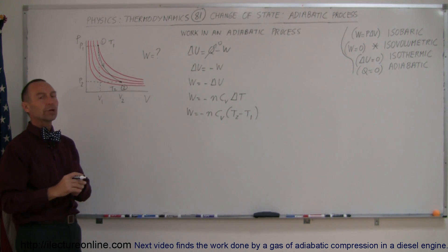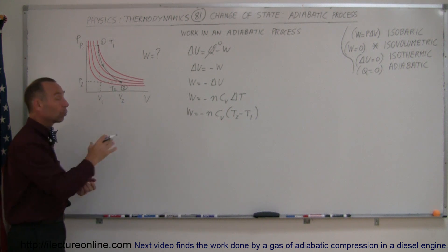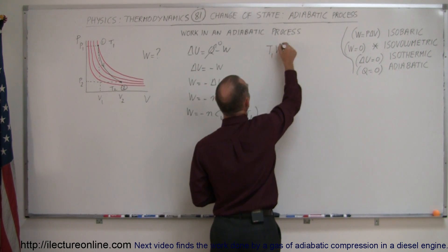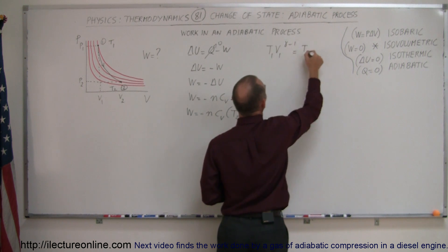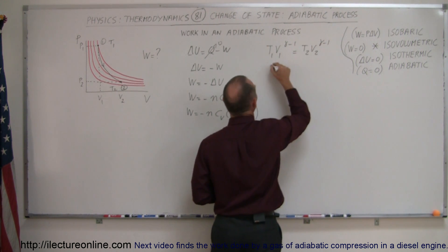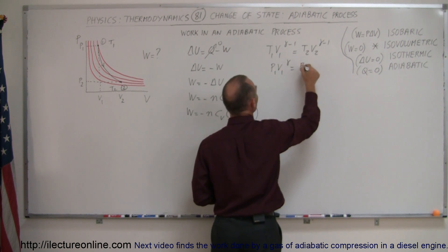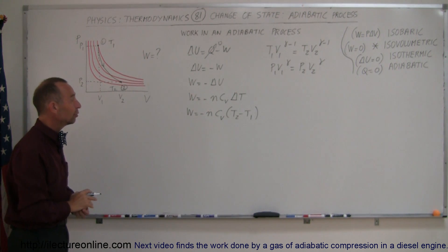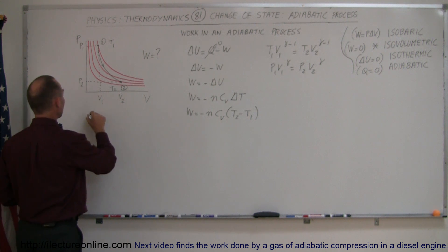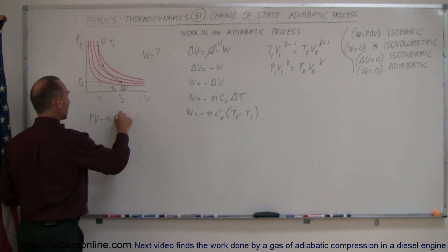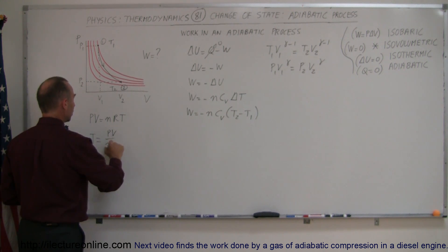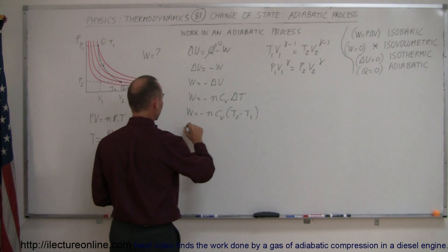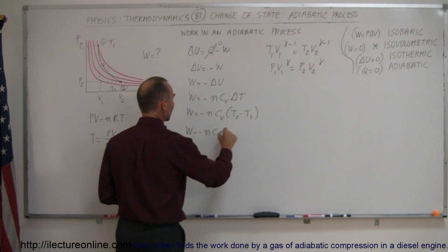Now, let's say you do not know what the temperatures are, but you know the pressures and/or the volumes. Using the adiabatic relations — T1 V1^(γ−1) = T2 V2^(γ−1) or P1 V1^γ = P2 V2^γ — you might be able to figure out P1, P2, V1, and V2. Then using the ideal gas equation PV = NRT, or T = PV/NR, you can replace the temperatures in the work formula.